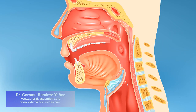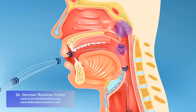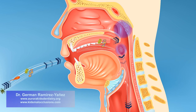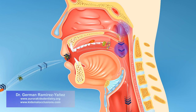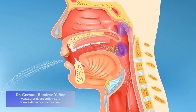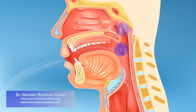Mouth breathing allows the air to pass directly into your throat, where the adenoids and tonsils are located. In that way, the air entering into your body through your mouth has not previously been purified, and the lymphoid tissue in the adenoids and tonsils becomes the first defensive barrier against the harmful particles contained in the air.